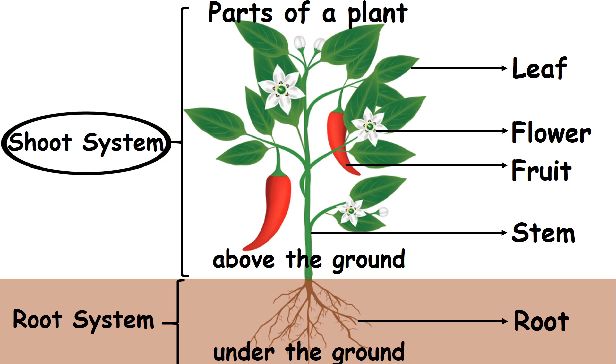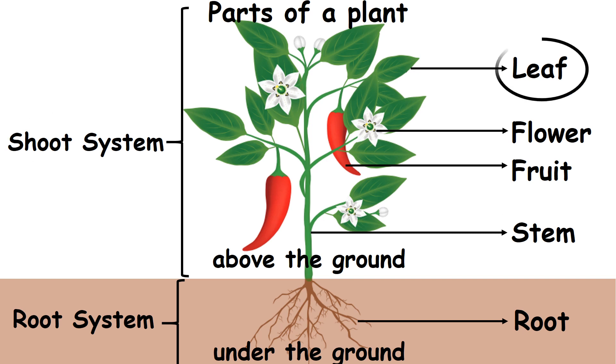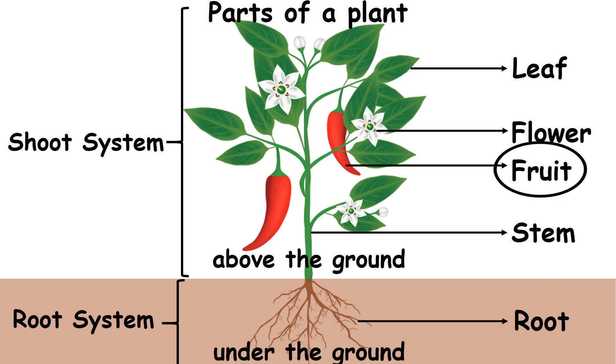The shoot system consists of stem, leaf, flower and fruit.